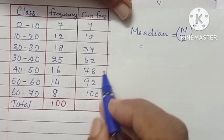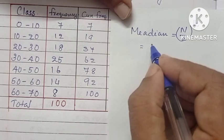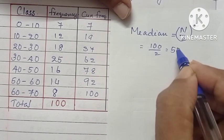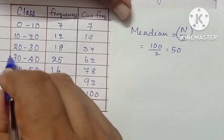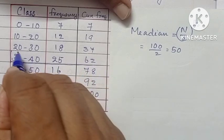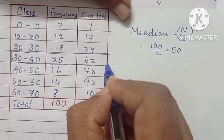Now the median, where n by 2 term is coming. Total number of frequency is 100. Therefore, 100 by 2 is equal to 50. 50 is coming in which cumulative frequency? That is in 62 cumulative frequency it is coming. Therefore, the median class is 30 to 40.